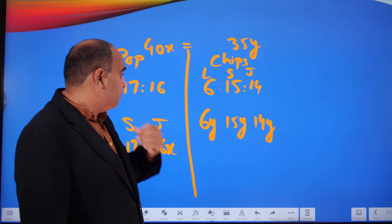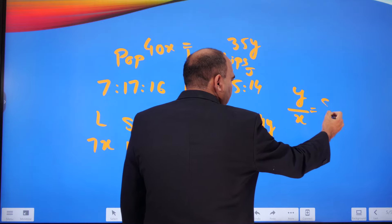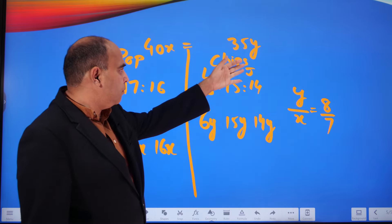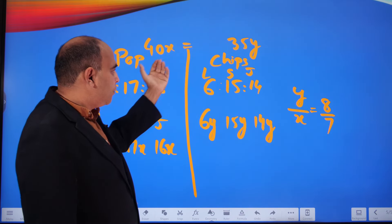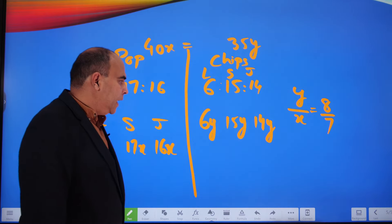That will give you a ratio of y by x as 8 by 7, because if you take x on that side and 35 on this side, you'll get 40 upon 35 is y by x, so 8:7.